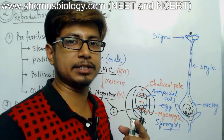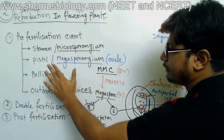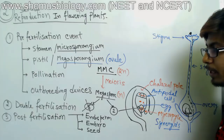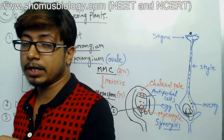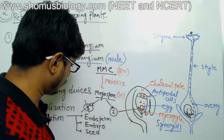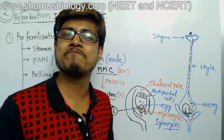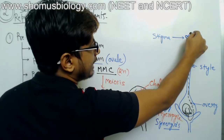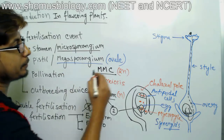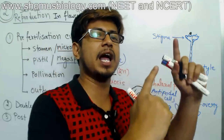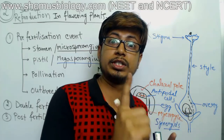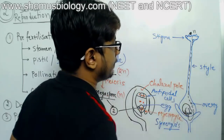Once this particular structure is made, fertilization can take place. The fertilization event in flowering plants is known as double fertilization — why? Because two fertilization events take place instead of one. All these nuclei carry n chromosomes and the pollen grain that lands also carries n chromosomes. The pollen grain carries two generative cells and one vegetative cell. The two generative cells produce two male gametes.